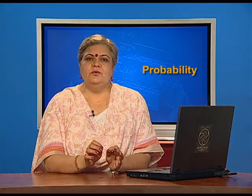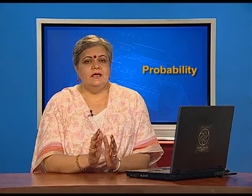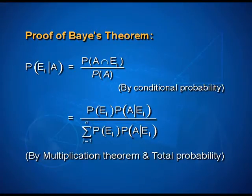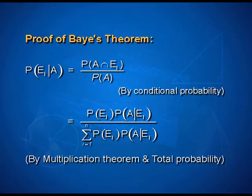A quick proof puts this in perspective. The conditional probability tells us that P(Ei|A) = P(A ∩ Ei) / P(A). The denominator P(A) is the total probability, since A is associated with events E1, E2, ..., En which partition the entire sample space. Therefore, we replace P(A) in the denominator with Σ P(Ei)·P(A|Ei), and the numerator is replaced by P(Ei)·P(A|Ei).